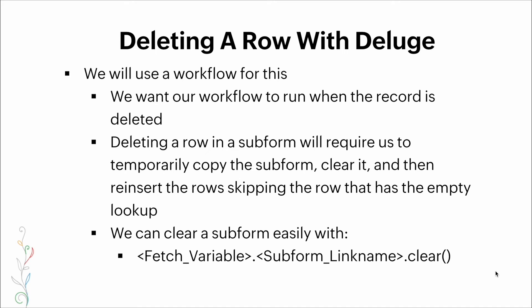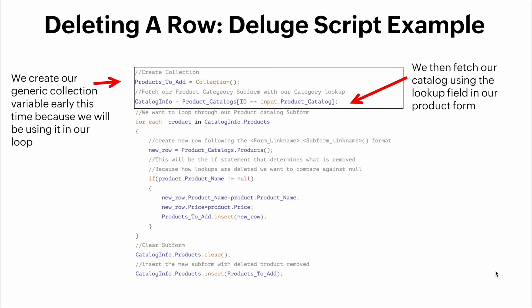Once again we'll use a workflow — we want it to run when the record is deleted. Deleting a row in a subform requires us to temporarily copy the subform, clear it, and then reinsert the rows while skipping the row that has the empty lookup. We can clear a subform easily with: `fetch_variable.subform_nickname.clear()`.